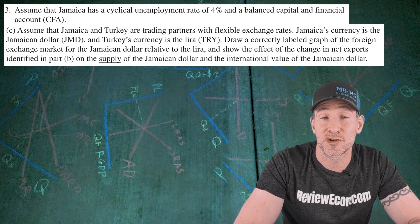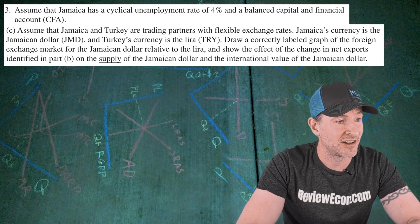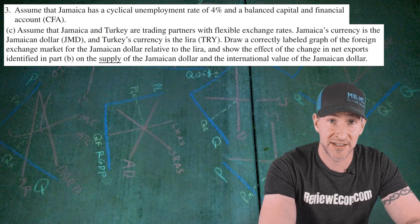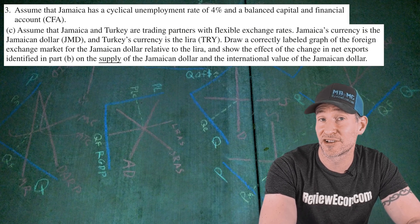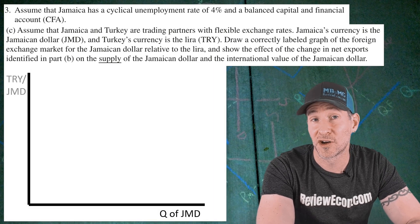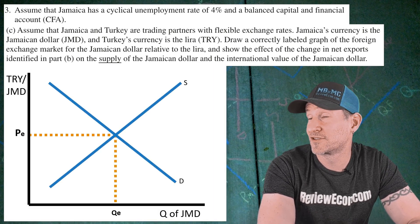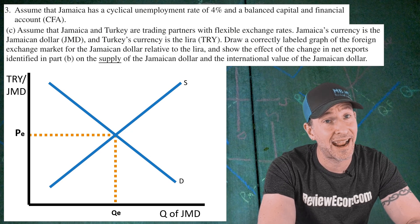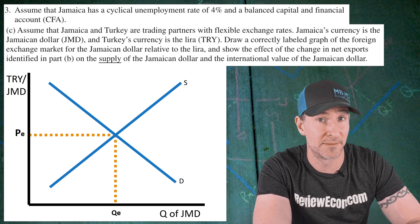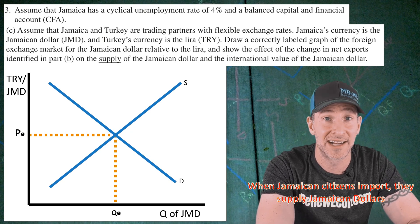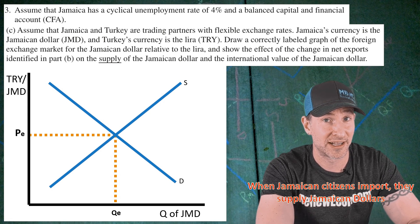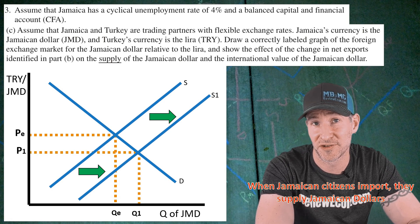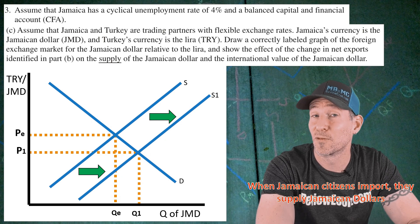For part C, Jamaica and Turkey are trading partners with flexible exchange rates. Jamaica's currency is the Jamaican dollar and Turkey's currency is the lira. We draw a foreign exchange market for the Jamaican dollar relative to the lira, showing the effect of the change in net exports on the supply of the Jamaican dollar and its international value. On the x-axis is the quantity of Jamaican dollars; on the y-axis is Turkish lira per Jamaican dollar. We have a downward sloping demand curve and an upward sloping supply curve, with equilibrium quantity and exchange rate at the intersection. Since Jamaican citizens are buying more imports, they supply more Jamaican dollars in the international market — shift the supply curve to the right. Mark the new equilibrium quantity and the new lower exchange rate. You get two points: one for the original graph and one for the shift with the lower exchange rate.